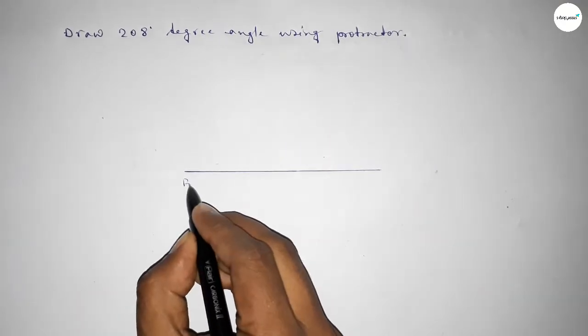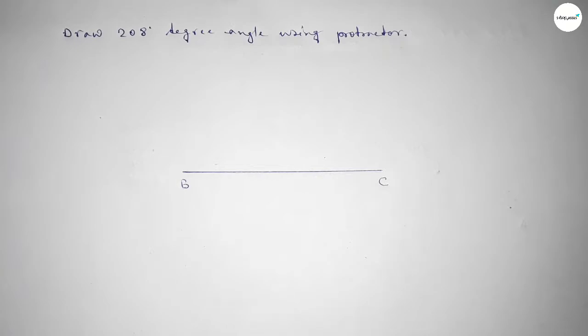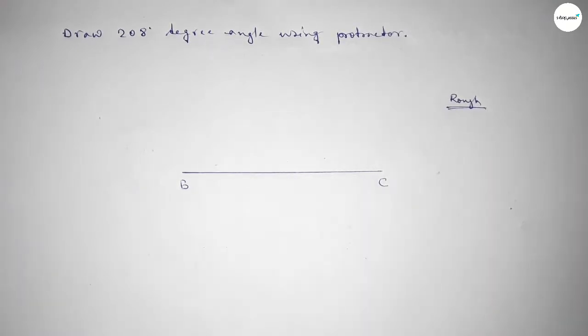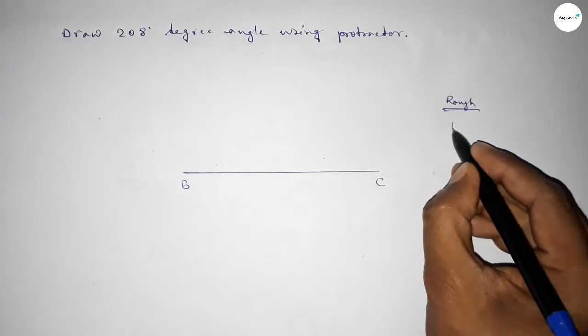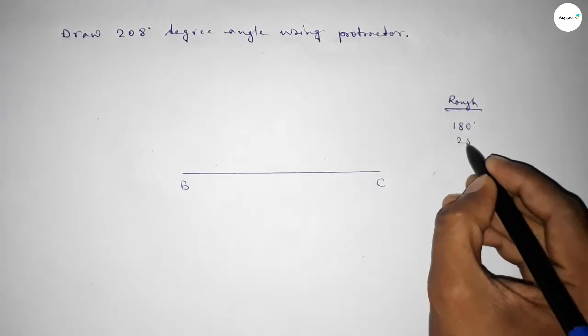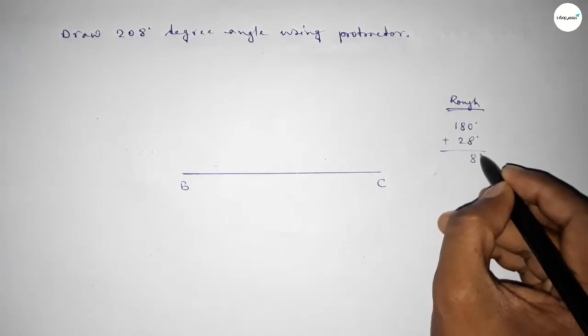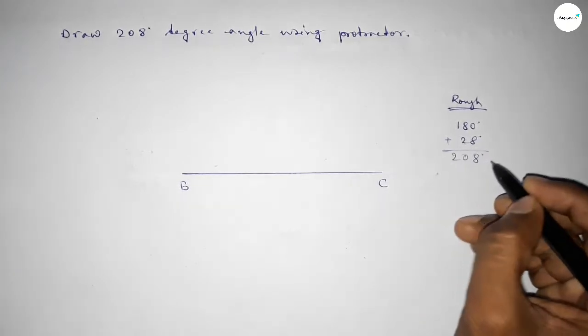Taking here point B and here point C. Now roughly discussing some calculation here. If we add 28 degree angle with 180 degree, then we can get 208 degree. So by adding, this is 8, 10 carry 1, so 2.